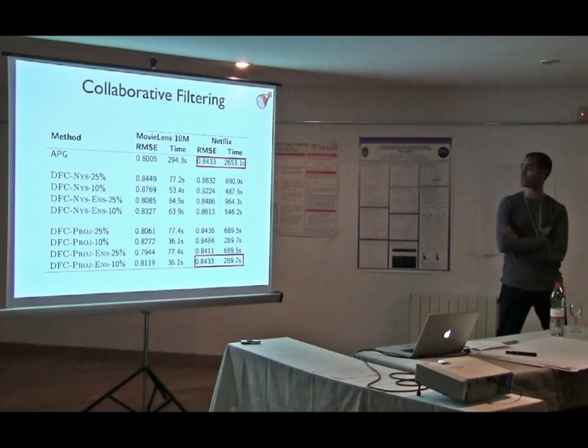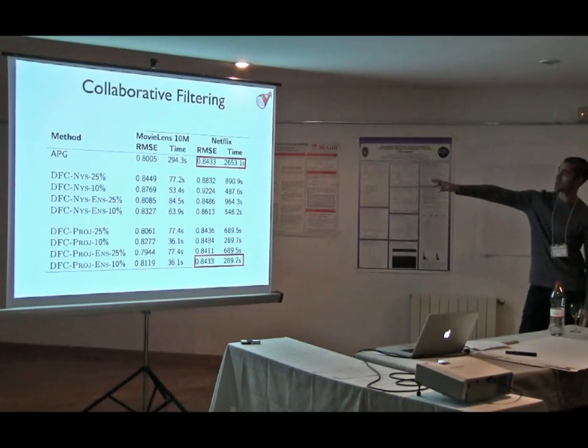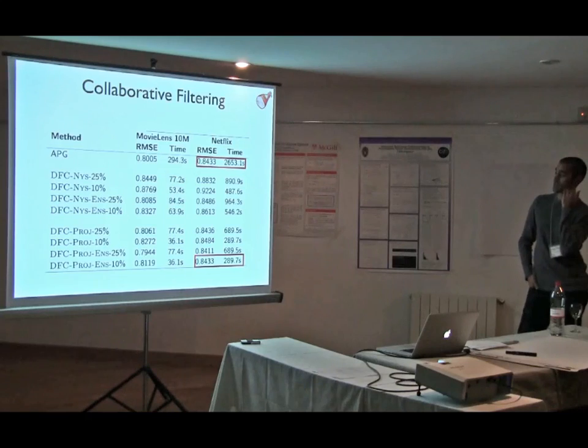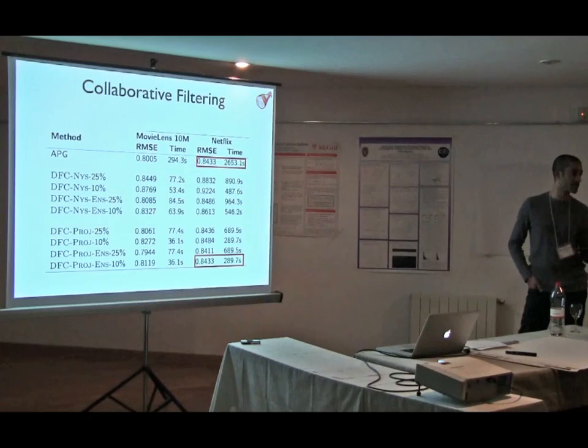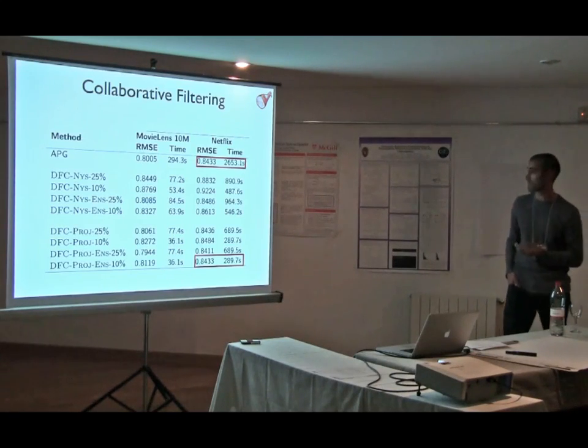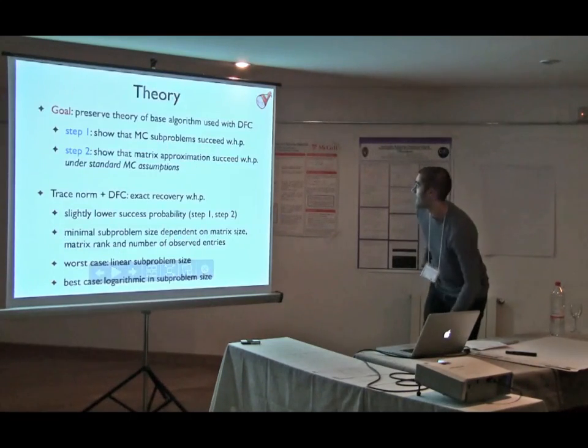but just to keep things short. The base algorithm we're working with is APG. And so if you look at the square up there, we get an RMSE of 8.8433 in a time of 2600 seconds. Again, using sampling 10% of the columns of our matrix, using the projection method and using the ensemble variant of it, we're able to get the same RMSE and a roughly 10x speed up in time, which we were happy about.